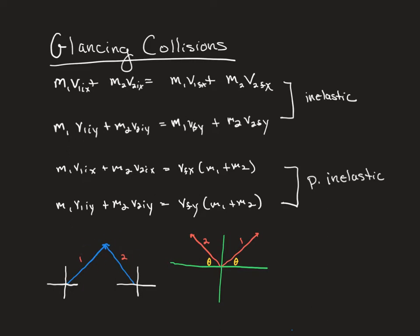Whenever we do glancing collisions, we're going to have motion in both the x and y directions. Because velocity is a vector, when we do conservation of momentum, we have to split that velocity into components. You'll notice there's an x-direction equation and a y-direction equation for inelastic, and an x-direction equation and a y-direction equation for perfectly inelastic.